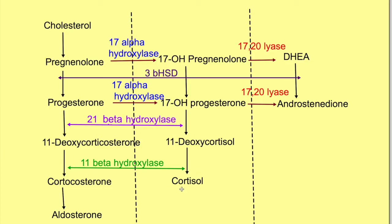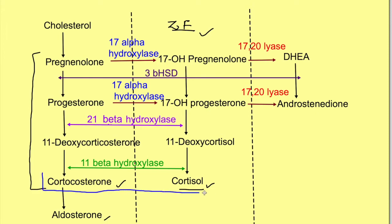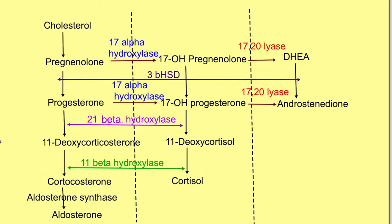Glucocorticoids are synthesized in the zona fasciculata. All enzymes required for mineralocorticoid synthesis are also present in zona fasciculata, meaning corticosterone and cortisol are both synthesized there. Corticosterone accounts for only 4% of glucocorticoid activity, but both are major steroids of the zona fasciculata. The final step — corticosterone to aldosterone — requires aldosterone synthase, which is present only in zona glomerulosa, explaining why mineralocorticoids are synthesized exclusively there.